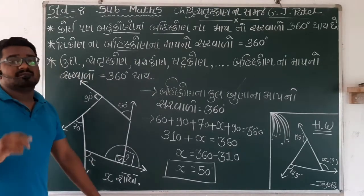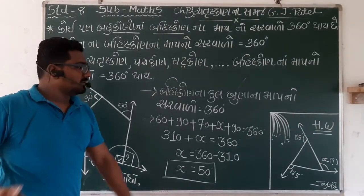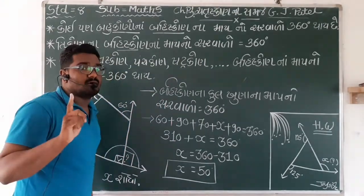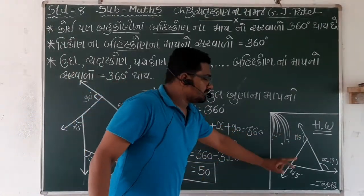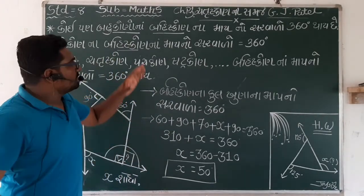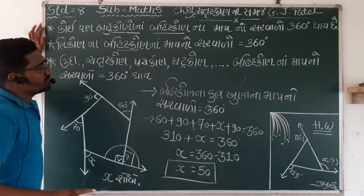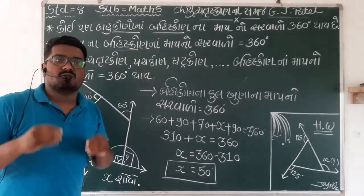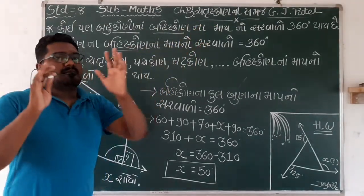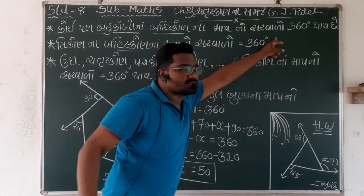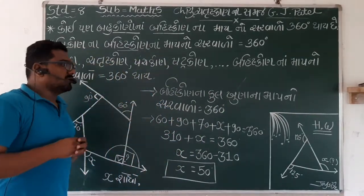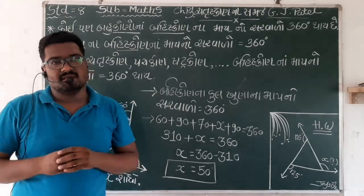વિ-દ્ય-ા-ર-થ-ી મ-િ-ત-ર-ો, X ની ક-િ-ં-મ-ત મ-ળ-ી ગ-ઈ. ફ-ર-ી-ત-ે ય-ા-દ ર-ા-ખ-ો: પ-ે-લ-ા મ-ુ-દ-્-દ-ા-મ-ા-ં - બ-હ-ી-શ ક-ો-ણ ત-ે-જ ર-ી-ત-ે ત-્-ર-િ-ક-ો-ણ મ-ા-ં પ-ણ હ-ો-ય. ગ-ૃ-હ-ક-ા-ર-્-ય ક-ર-ી દ-ે-વ-ુ-ં, note ક-ર-ો, અ-ન-ે વ-િ-ડ-ી-ઓ સ-મ-ા-પ-્-ત.